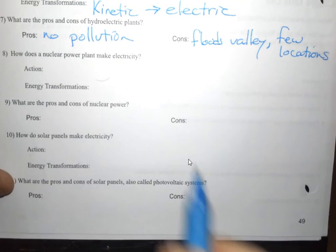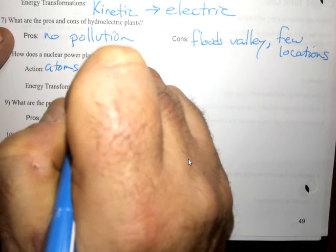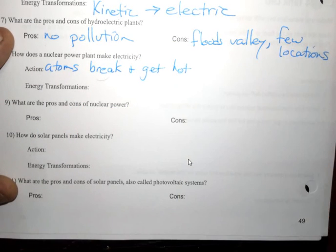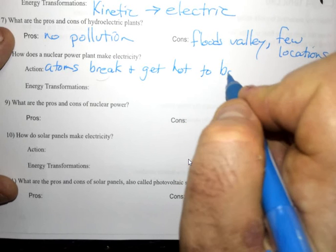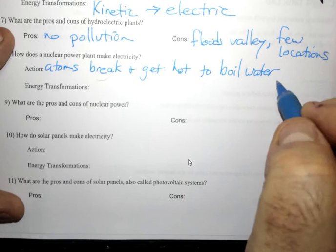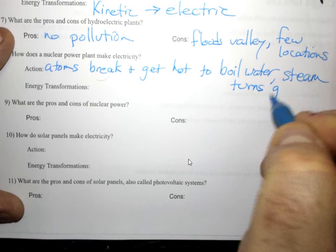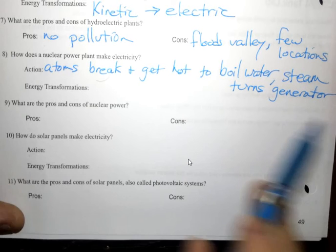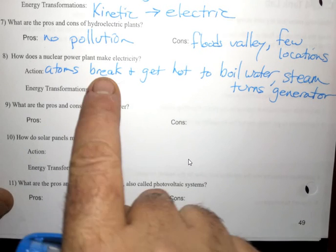How does a nuclear power plant make electricity? Action: the atoms in the fuel rods, atoms break and get hot, which boils water, and the steam turns a generator. So everything from getting the water hot to turning the generator is the exact same thing as a coal power plant. It's just a fancier way of boiling the water. Instead of a fire, you have these hot fuel rods. We're going to learn about how these atoms break in second semester.